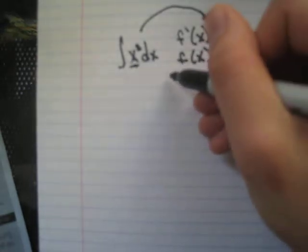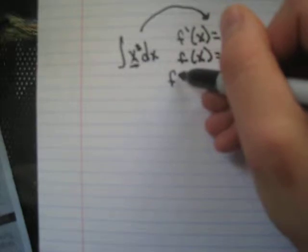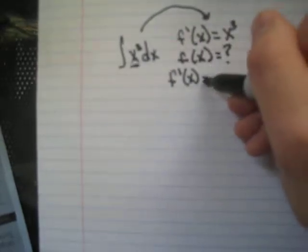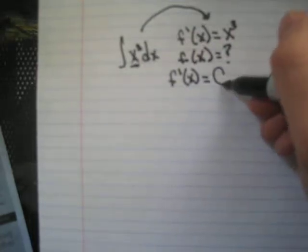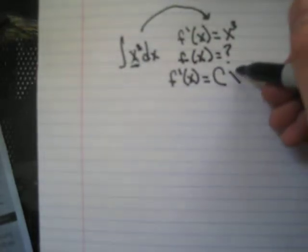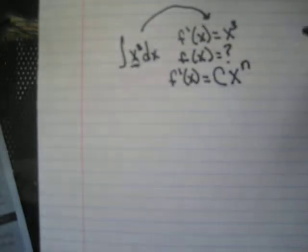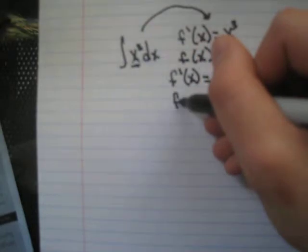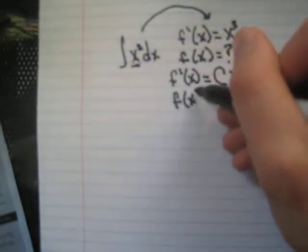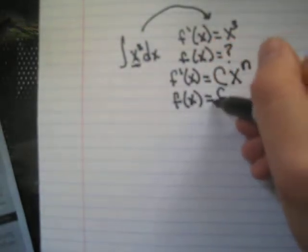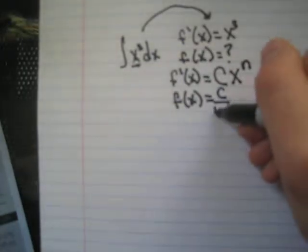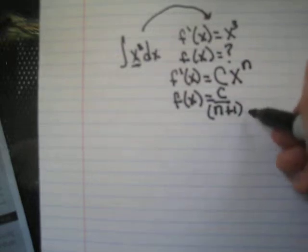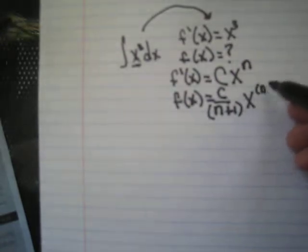So if we're given that the derivative of a function is equal to c, the coefficient of x, times x to the power of n, it's going to be equal to the coefficient divided by n plus 1, times x to the power of n plus 1.